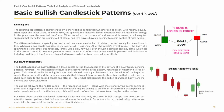The bullish abandoned baby pattern is a three-candle setup that appears at the bottom of a downtrend, signaling potential reversal. The characteristic feature is the second candle in the pattern, regardless of whether it is red or green. The second candle, including its upper wick, should have a gap between it and the wicks of the large red candle that precedes it and the large green candle that follows it. In other words, there is a gap that remains on the chart both prior to the second candle and after it. This is what distinguishes the bullish abandoned baby from the morning star reversal pattern. The gap up following the middle candle, the abandoned baby, along with the strong buying power behind it, gives bulls a degree of confidence that the downtrend may be coming to an end. If this pattern is accompanied by an increase in volume in the third candle, this is additional confirmation that an uptrend may be on the horizon.